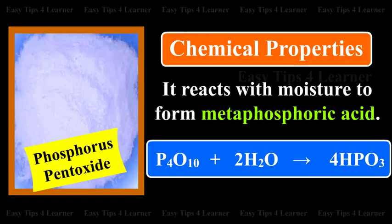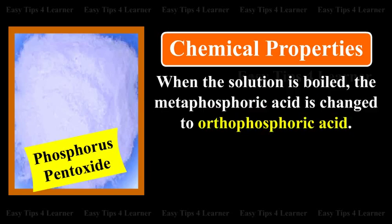Chemical Properties: Phosphorus pentoxide reacts with moisture to form metaphosphoric acid. When the solution is boiled, the metaphosphoric acid is changed to orthophosphoric acid.